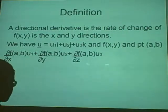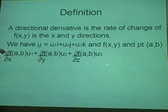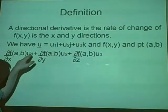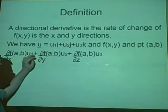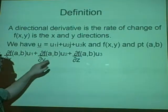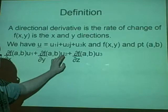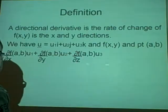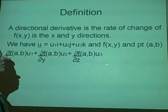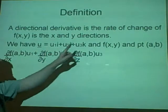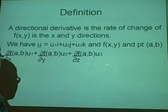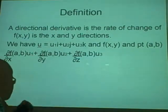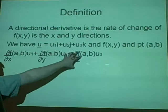To find it, we use partial derivatives, so it's delta f over delta x of ab times u1 plus delta f over delta y of ab times u2 plus delta f over delta z of ab times u3. This is finding the directional derivative of f at the points ab in the direction of u.